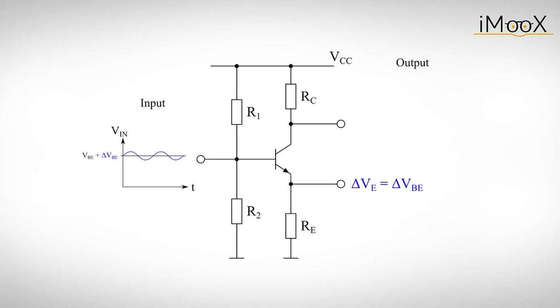Now imagine a small AC voltage, delta VBE at the input of the amplifier. The emitter will follow the change of the voltage so that delta VE is equal to delta VBE. This will cause an alternating emitter current, delta IE.